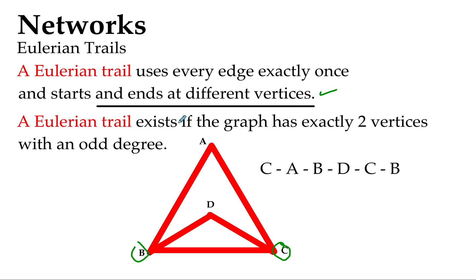Let's have a look at the second bit. It exists if the graph has exactly two vertices with an odd degree. Now let's just quickly, that's got a degree of two, which is an even degree. That's got a degree of two, which is an even degree. But have a look at these two. That's got a degree of three because there are three edges connecting with it.